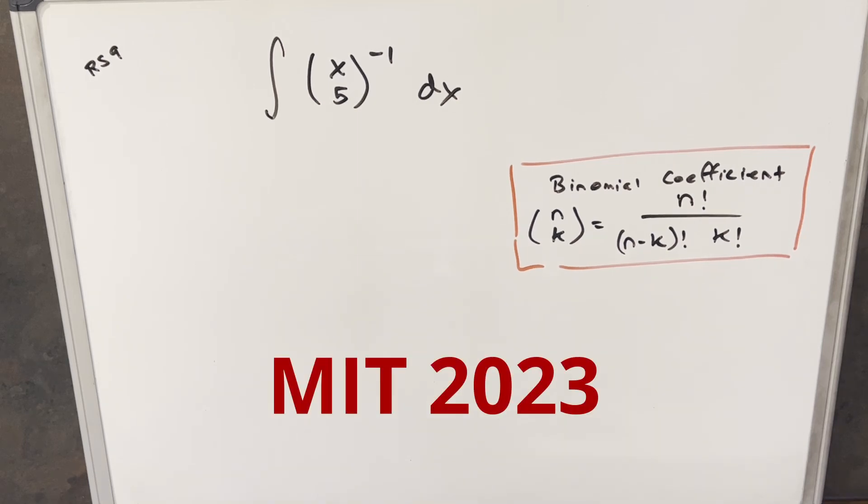Hey, we have here today a pretty unusual looking integral from the MIT Integration Bee 2023. This was regular season problem number 9. We have the integral of x choose 5 to the minus 1 power dx.